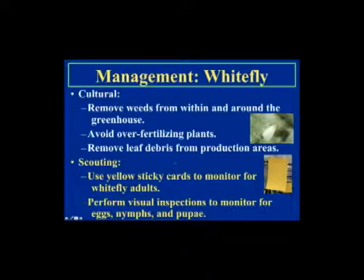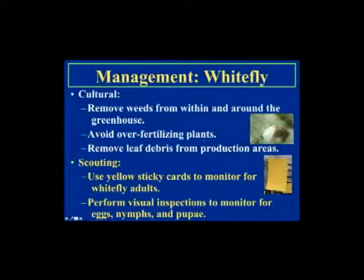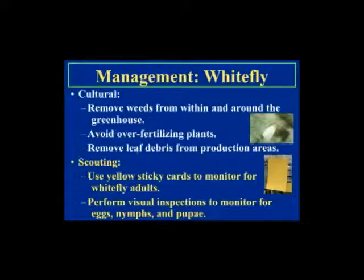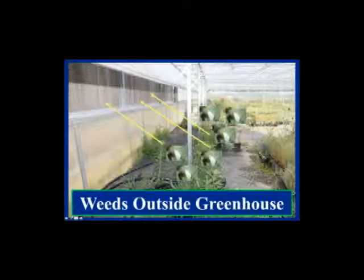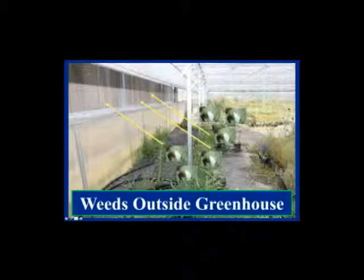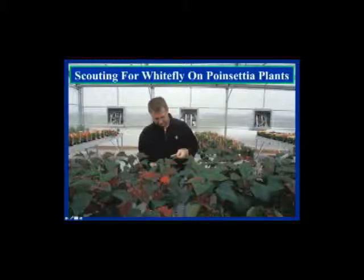Whitefly management: remove weeds, as many serve as alternate food sources or reservoirs. Avoid over-fertilizing plants — studies show poinsettias receiving excessive fertilizer are much more attractive to whiteflies. Remove any leaf debris, since pupae on debris will still produce adults. For scouting, use yellow sticky cards for adults and perform visual inspections to monitor eggs, pupae, and nymphs. Keep weeds cleared 20 to 30 feet from any openings — doors, sidewalls, or vents. You cannot find nymphs, eggs, and pupae on sticky cards, so visual inspections are essential.